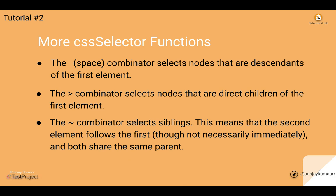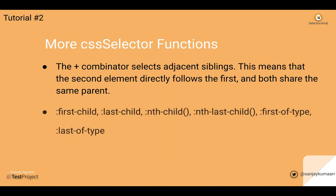The tilde combinator selects siblings — this means that the second element follows the first, though not necessarily immediately. The plus combinator selects adjacent siblings, one next to each other. Then there are also pseudo-selectors: first child, last child, nth child, nth last child, first of type, and last of type.